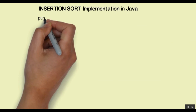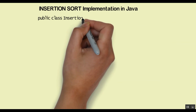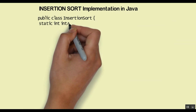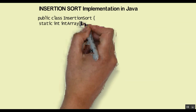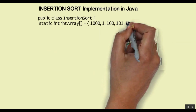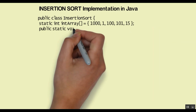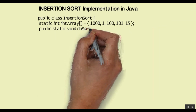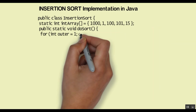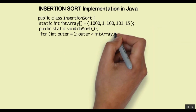Let us now look at the Java code for implementing insertion sort. We start by making a Java class — public class InsertionSort. The class name is quite straightforward. Then we have a static int array. This int array is a static array of primitive ints containing the five number list which we saw an example of just a while back. Next we create the doSort method, which is the method that will actually sort the array of ints.